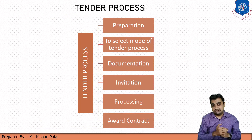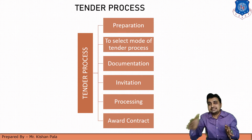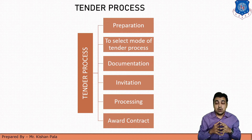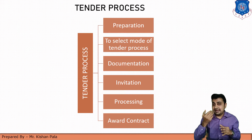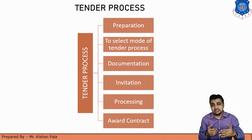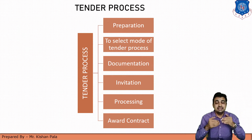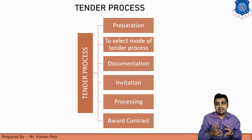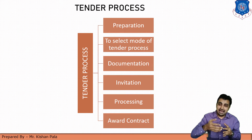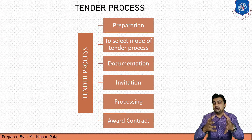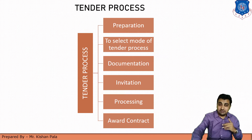Now we will start the tender process. In the tender process, we have to follow certain stages. We start from the preparation of the tender, then we select the particular mode of tender process, then we finalize the document for that work. The next stage is invitation of the work to the market. Next is processing — which involves many sub-stages like submitting of the tender, opening of the tender, rejecting of the tender, and scrutinizing of the tender. After passing all the stages, our last stage is the contract, meaning we have finalized the contractor to do that work. Let us discuss these one by one in detail.